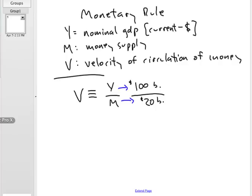The only way that could be true would be if velocity was equal to 5, which means to say that the average piece of money changes hands five times.